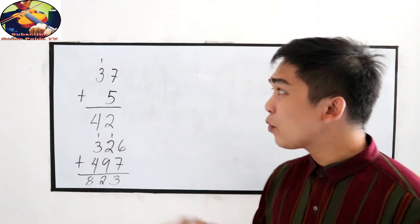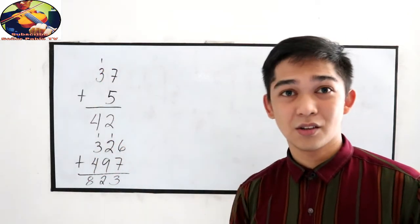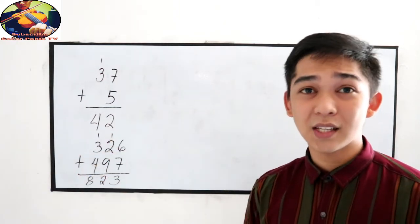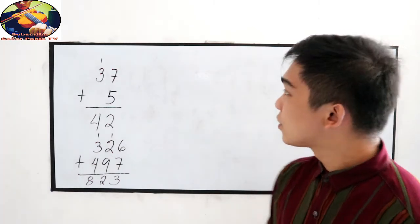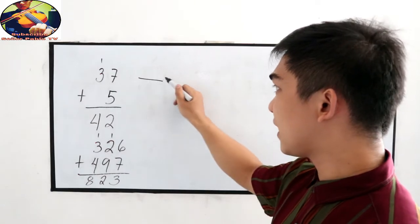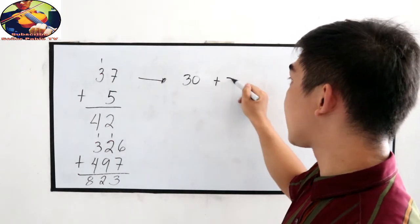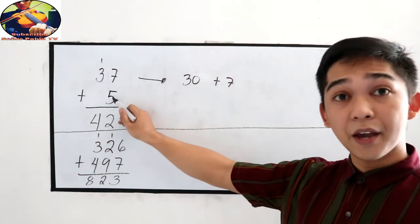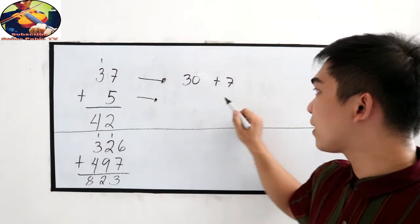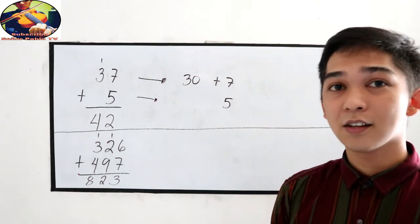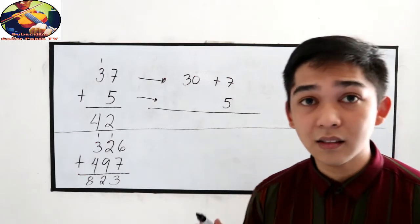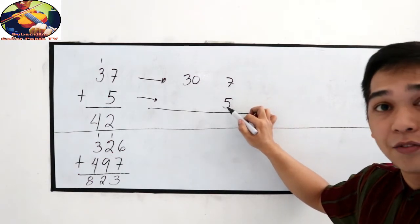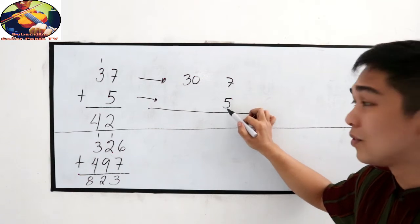Now I will explain to you why we have these carry numbers. What we call carry number 1, carry 2 — where did it come from? It came from the expanded form. Our expanded form here is 30 plus 7, adding with a single digit number which is 5. The value of 5 in expanded form is simply 5. So after adding, the number in our 1's place: 7 plus 5, that is 12.